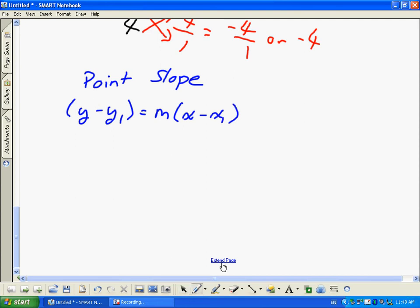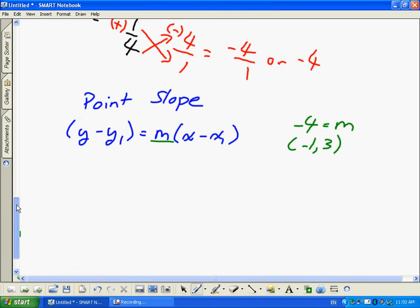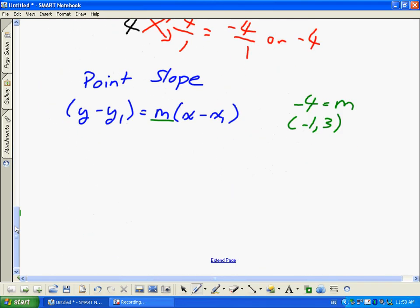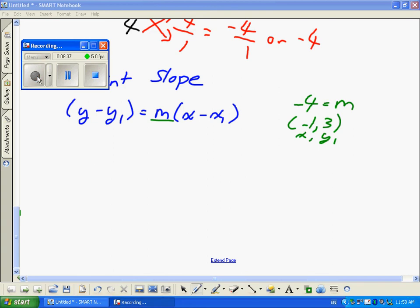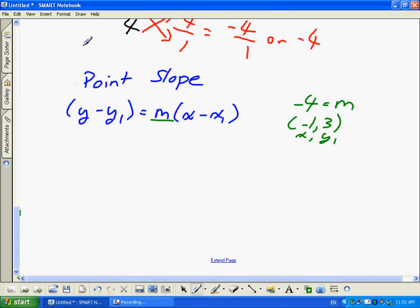If we plug these into point slope form, you guys remember our point slope form. Point slope form is our Y subtract Y1 is equal to M times X subtract X1. We have our M. It's our negative reciprocal of the slope of AB. We discovered it was negative 4. So that's our M. Our point, our point was the midpoint. That is going to be a point on the line. We do know that. So our midpoint was negative 1 and 3.